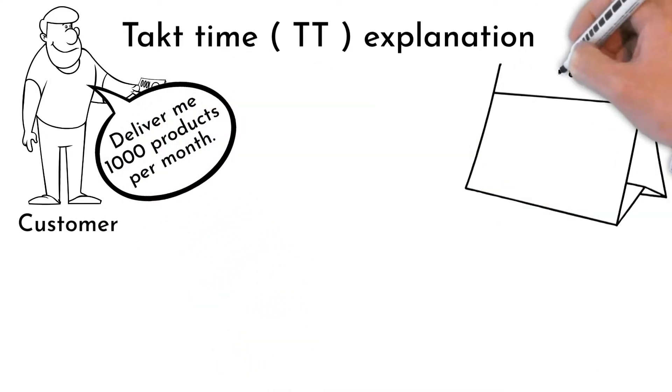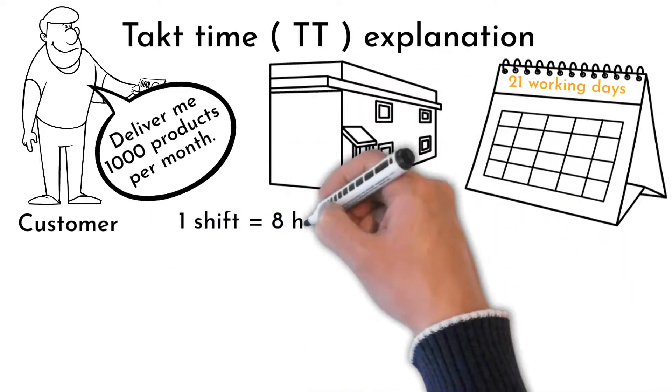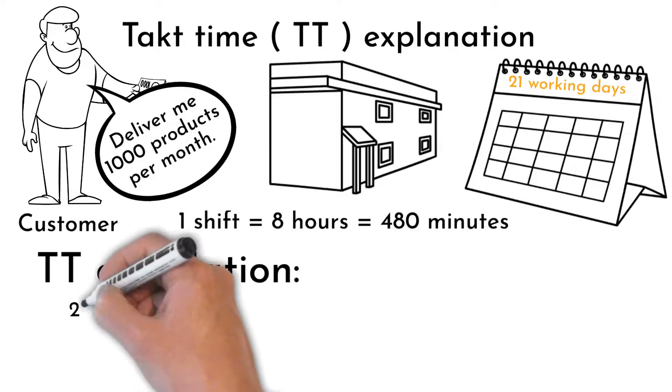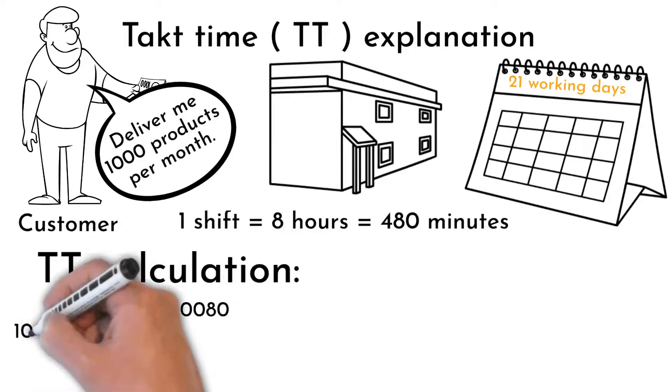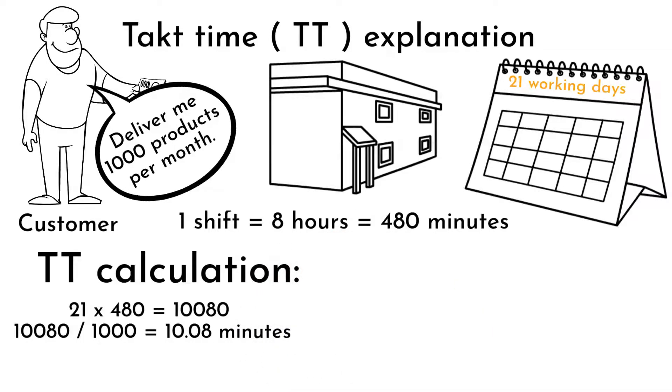There are 21 working days in that month. If facility works one shift and the shift lasts eight hours, which is 480 minutes, our takt time will be: 21 times 480 equals 10,080 divided by 1000 equals 10.08 minutes.